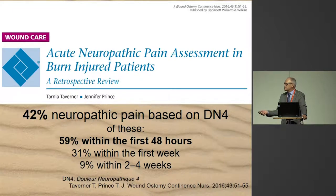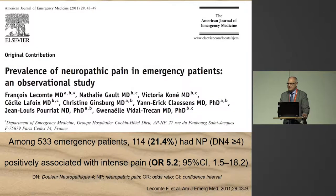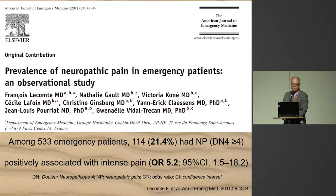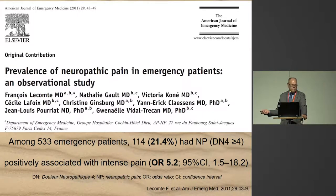DN4 screening showed acute neuropathic pain in the first 48 hours in over 50% of burns injury patients, and it persisted into the 2–4 week post-burn period with still 9% of patients. In emergency departments, the prevalence of neuropathic pain was 21.4% — 1 in 5 patients presenting had a neuropathic pain component, again diagnosed with the DN4, which is positive if you score more than 4 out of 10 points.